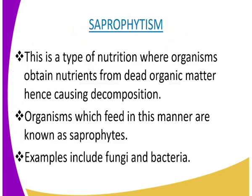We have another relationship known as saprophytism. Saprophytism is a type of nutrition where organisms obtain nutrients from dead organic matter, hence causing decomposition. Organisms which feed in this manner are known as saprophytes, and include fungi and bacteria. The decomposition releases nutrients into the ecosystem, which are then made available to other living organisms.